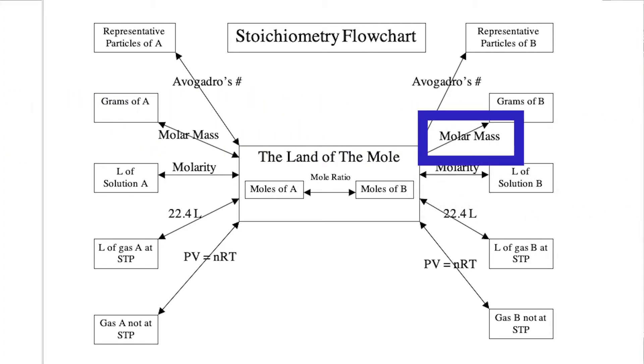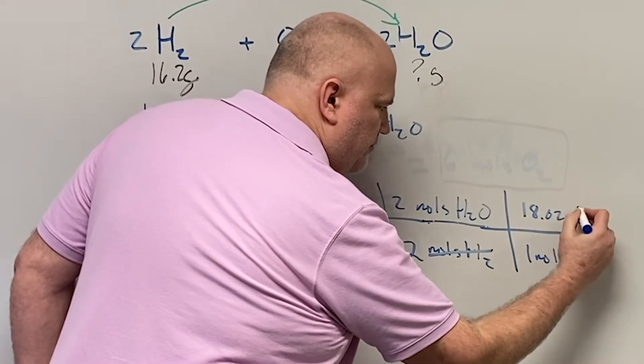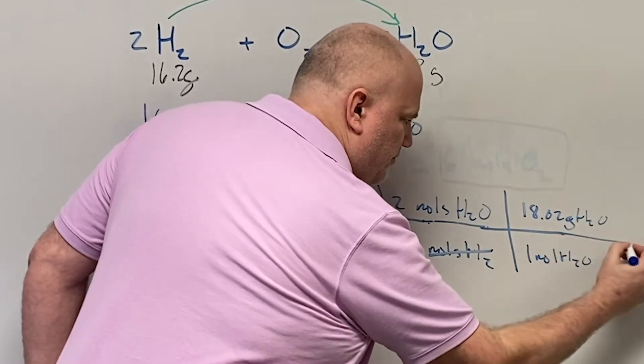And the molar mass, of course, we find that from the periodic table. And one mole of water. And water is H. There's a mass of 2. 16 for oxygen.